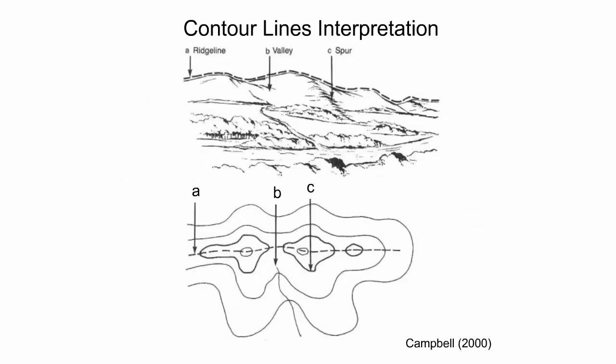Contour shape provides further information on terrain characteristics. The dashed line in the figure approximates the ridge line. Water-cut stream valleys have crossing contours where the V-shaped contour points in the upslope direction, as shown at point B. Ridges or spurs have crossing contours where the V-shaped contour points in the downslope direction, as shown at point C. The relative roundness of the contours at point A reflects the form of the ridge.